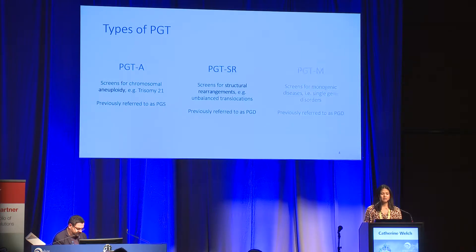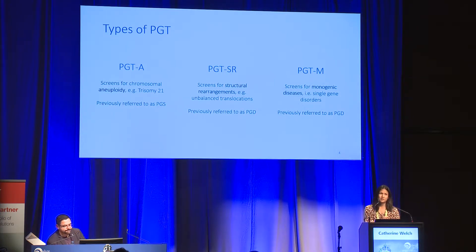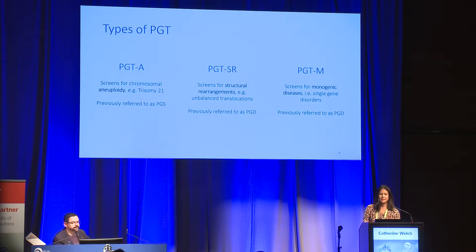The types again: PGTA screens for chromosomal aneuploidy, previously referred to as PGTS. PGTSR screens for structural rearrangements — which is what I'm going to be talking about today — for instance, unbalanced translocations, previously referred to as PGD. PGTM screens for monogenic diseases, i.e., single gene disorders, previously also referred to as PGD.